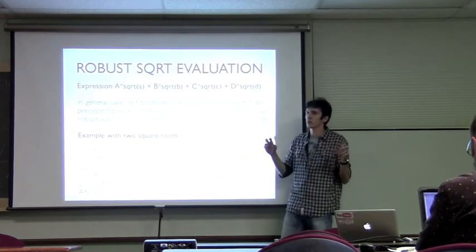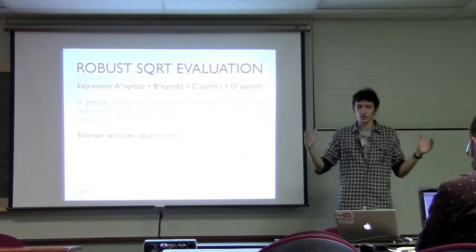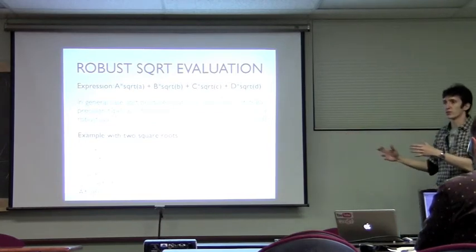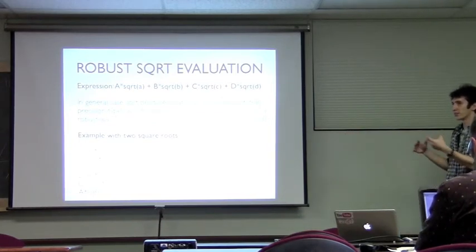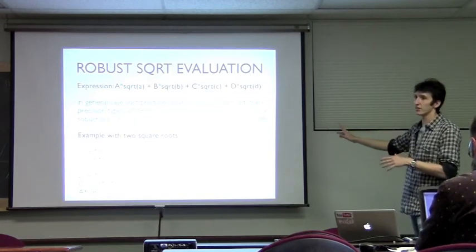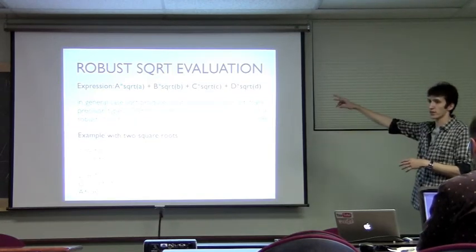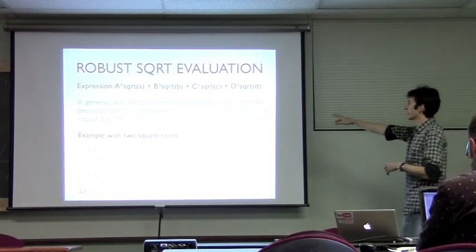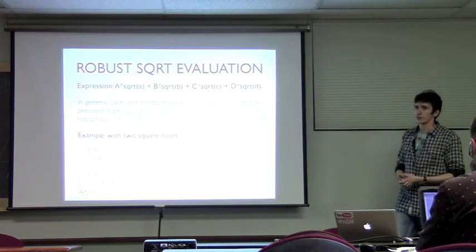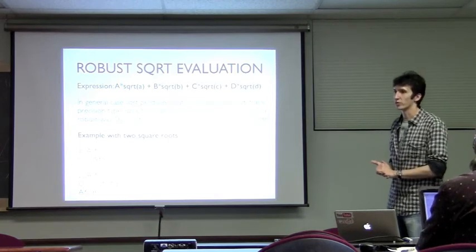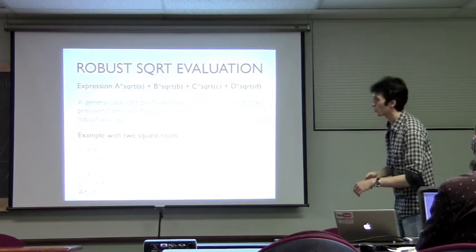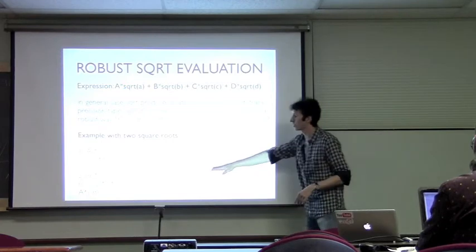If you add another square root beyond four, this technique doesn't work — at least I don't know a way. When you start multiplying by conjugates with more than four square roots, the number of square roots will increase rather than decrease.